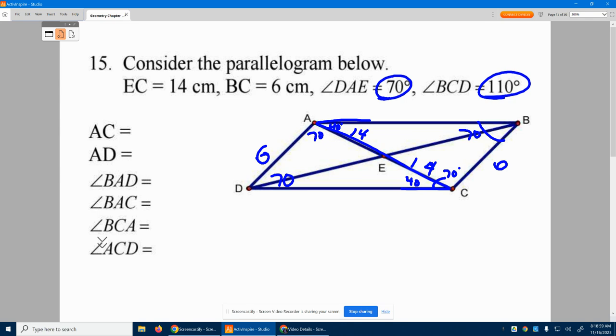Now we can go answer all our questions. AC - that whole length down from here to there. Well, 14 and 14 makes 28.